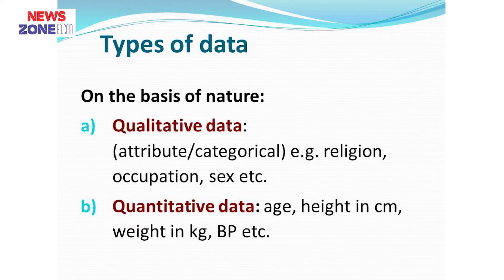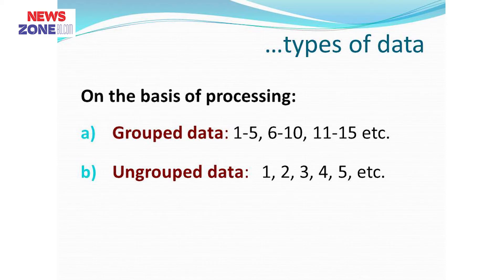Quantitative data are numerical information like age in years, height in centimeters, weight in kg, etc. We can also classify data into two groups based on processing: grouped data and ungrouped data. Grouped data are class interval data like 1 to 5, 6 to 10, 11 to 15, etc. Ungrouped data are literally ungrouped, like 1, 2, 3, 4, 8, 9, 11, etc.